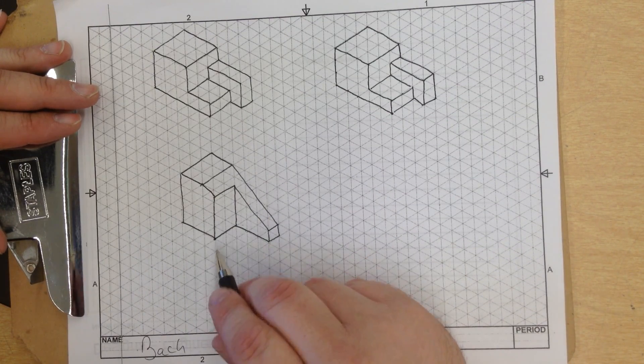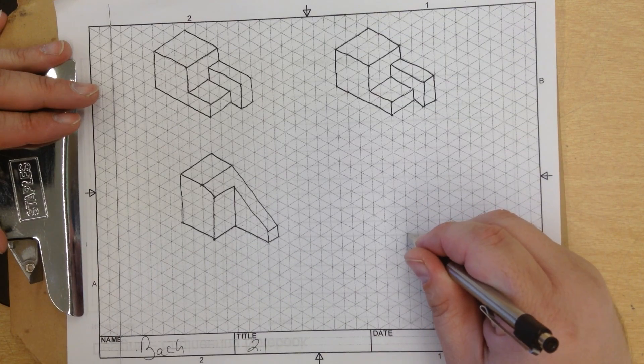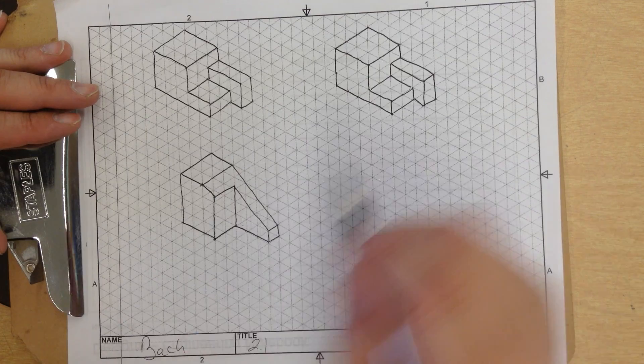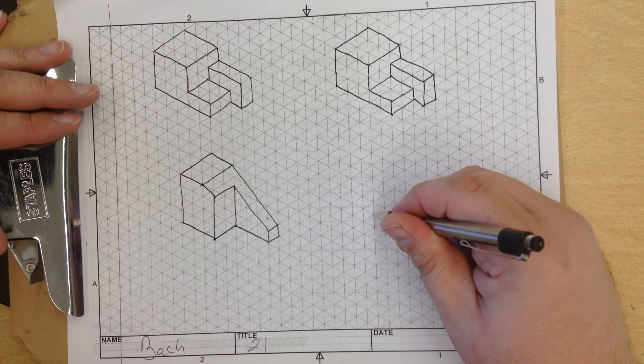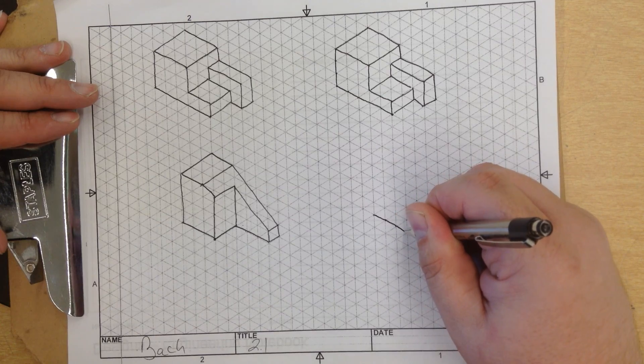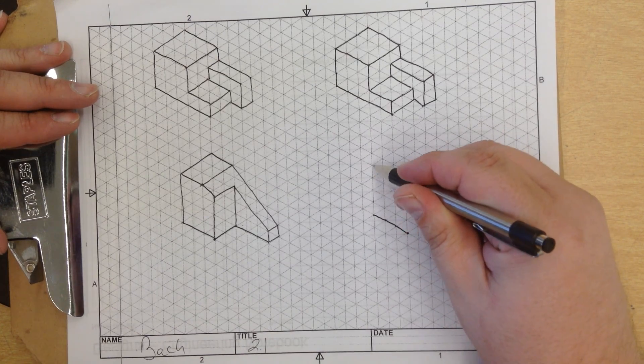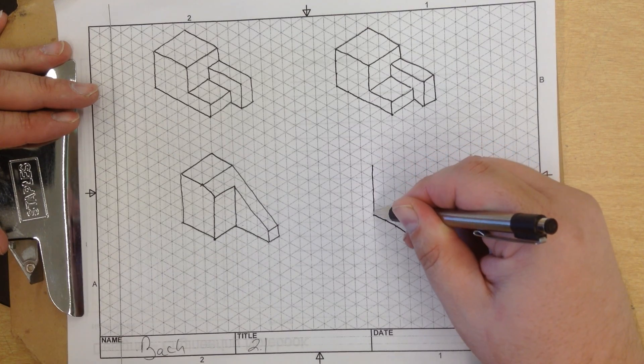We're going to start with the same origin point. So I'm going to draw my origin point right there. It goes 3 units over - 1, 2, 3. Draw the line. It goes 4 units up - 1, 2, 3, 4. Connect the line.